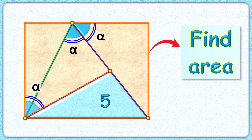Welcome everyone. The question given to us is: a rectangle in which we have drawn a purple and green line segment such that they are making an angle of alpha degrees each. We have also drawn a red line segment that makes an angle of alpha degrees with the side length of the rectangle. Given that the area of the triangle formed is 5 cm², we have to find the area of the full rectangle.